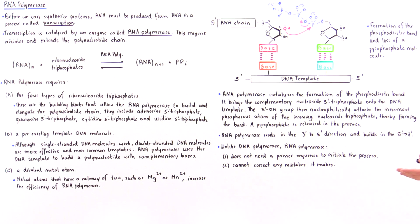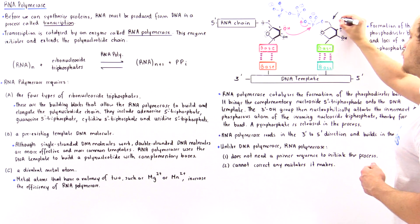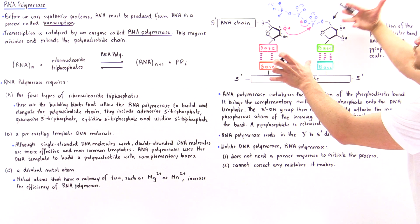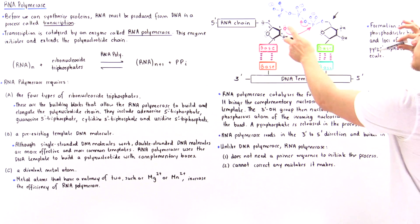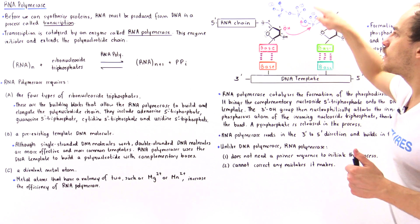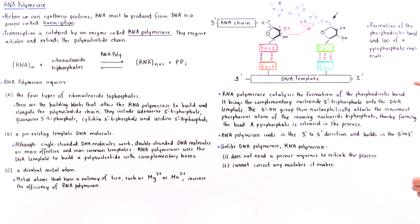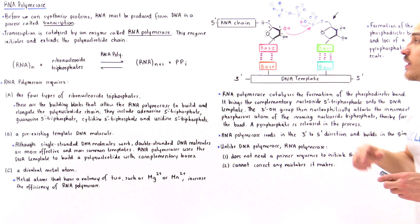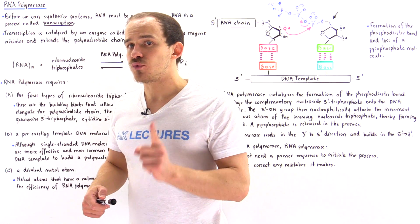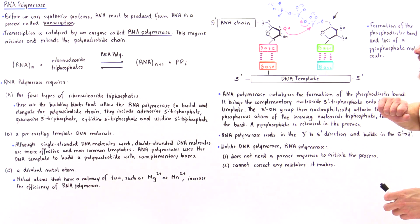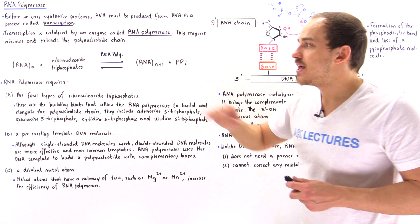RNA polymerase catalyzes the formation of the phosphodiester bond — it brings the complementary nucleoside triphosphate into position, holds it in place, and catalyzes the formation of that bond, releasing pyrophosphate as a result. RNA polymerase reads the DNA template from the 3' to 5' end but synthesizes that polynucleotide chain in the 5' to 3' direction. This is the same method that DNA polymerase uses — DNA polymerase also reads the DNA template from 3' to 5' and synthesizes the new strand from 5' to 3'.